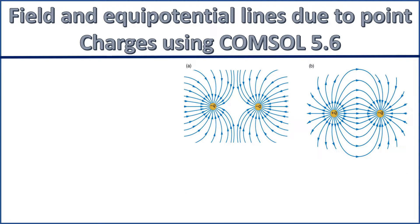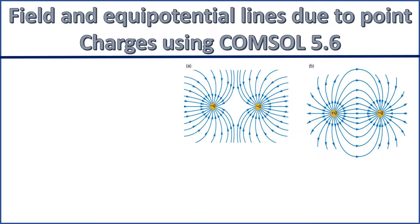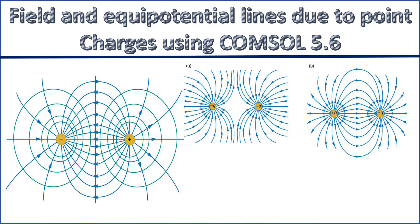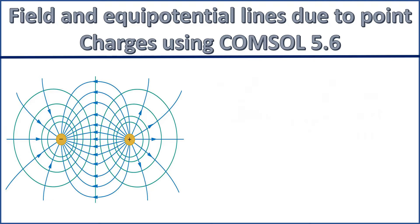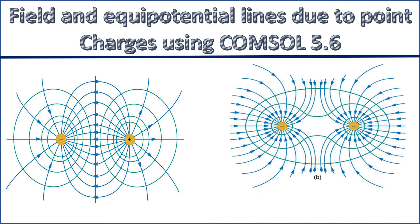We know from college physics how the field lines look like. The electric field is given by E equals KQ by R. We also simulate the equipotential lines around the charges. Equipotential lines are formed by connecting all the points having the same potential. The potential due to a point charge can be obtained by using V equals KQ by R.